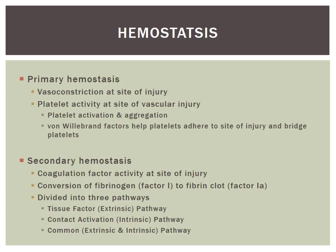Today we will be discussing hemostasis, which means the stopping of blood. Hemostasis is divided into primary hemostasis and secondary hemostasis. Primary hemostasis occurs first, and immediately following an injury you will have vasoconstriction of the vessels — contraction of the vessels trying to control that bleeding. Also in primary hemostasis, the platelets will start to be activated, begin to collect together and aggregate. Von Willebrand factors are involved in this, helping platelets to better adhere together and form platelet bridges to try and stop that bleeding.